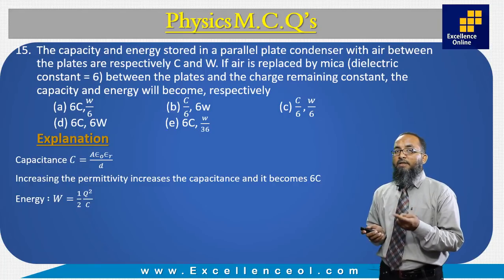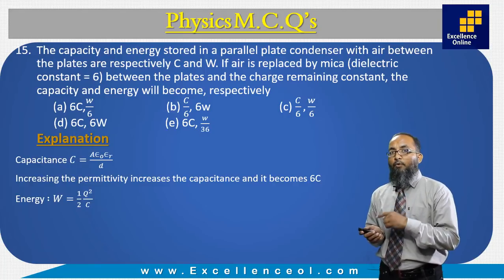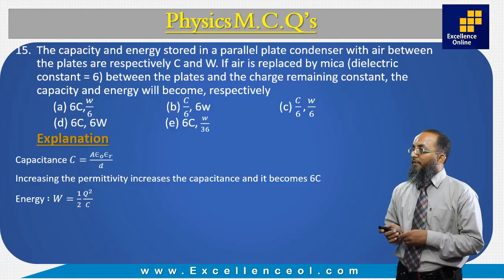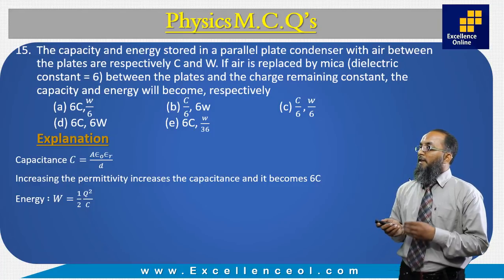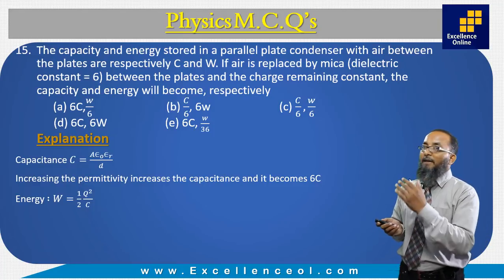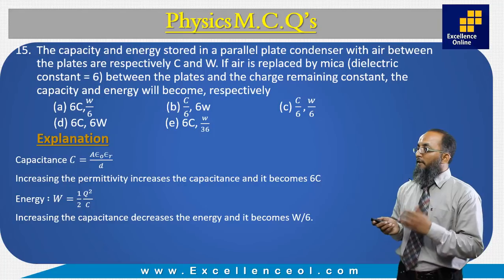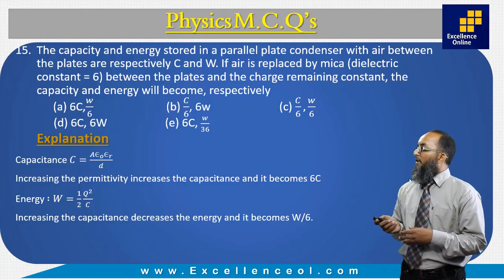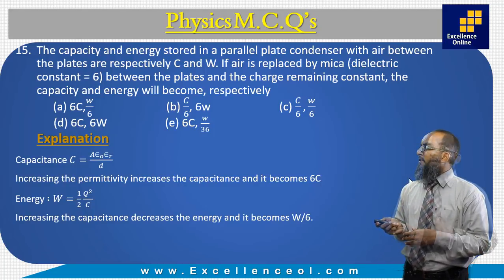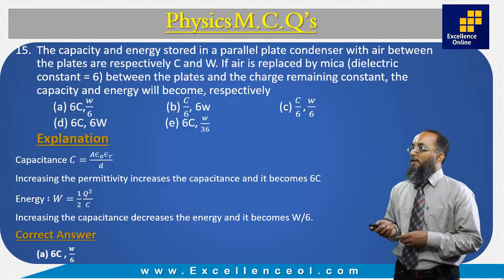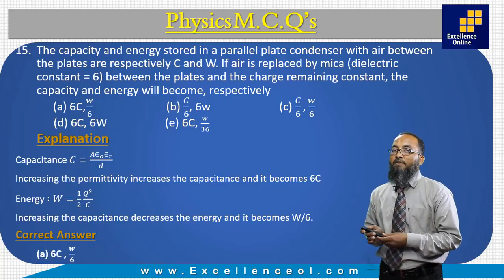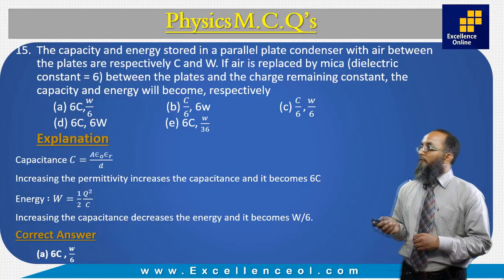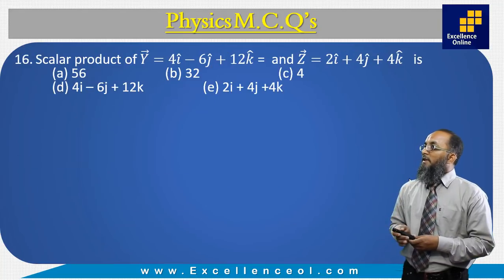The energy stored in a capacitor is inversely proportional to capacitance when charge is constant. So if capacitance increases 6 times, energy decreases by a factor of one-sixth. The correct answer is A: capacitance becomes 6C and energy becomes W/6.